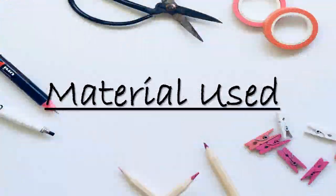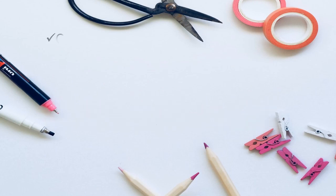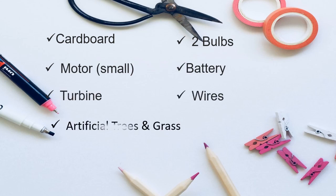In this slide, I am going to tell you about the materials that we used in the preparation of the project. The things we used were: a cardboard, two bulbs, a small motor, a battery, a turbine, some wires, artificial trees and grass for decoration, and craft materials like scissors, tape, and glue.